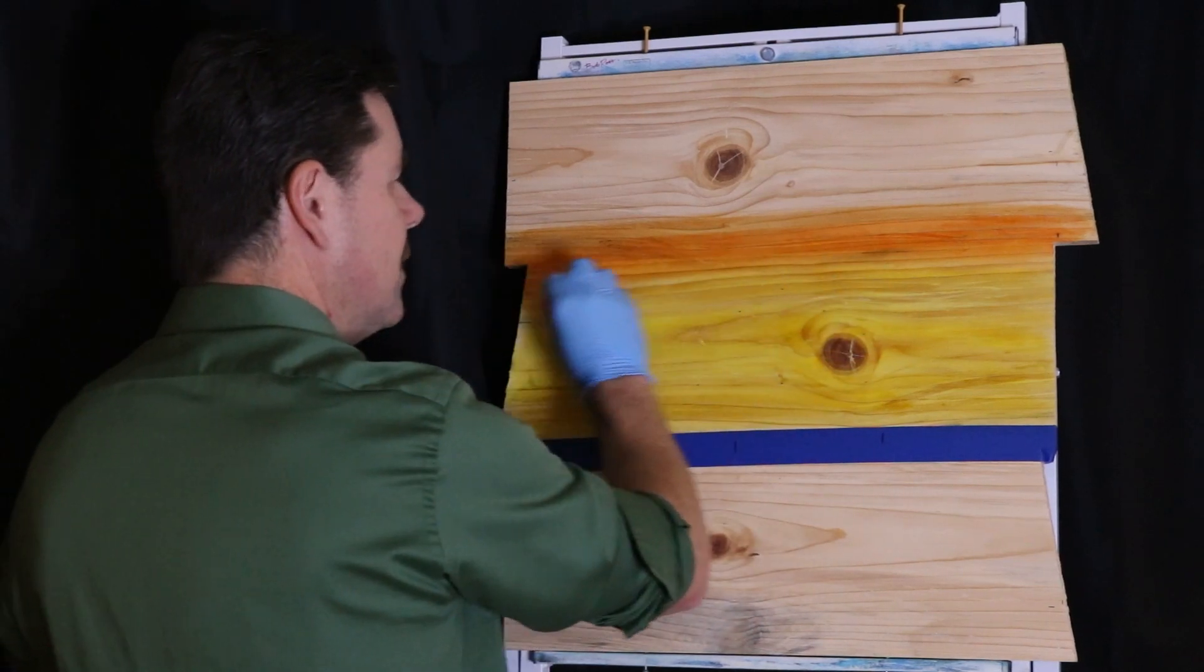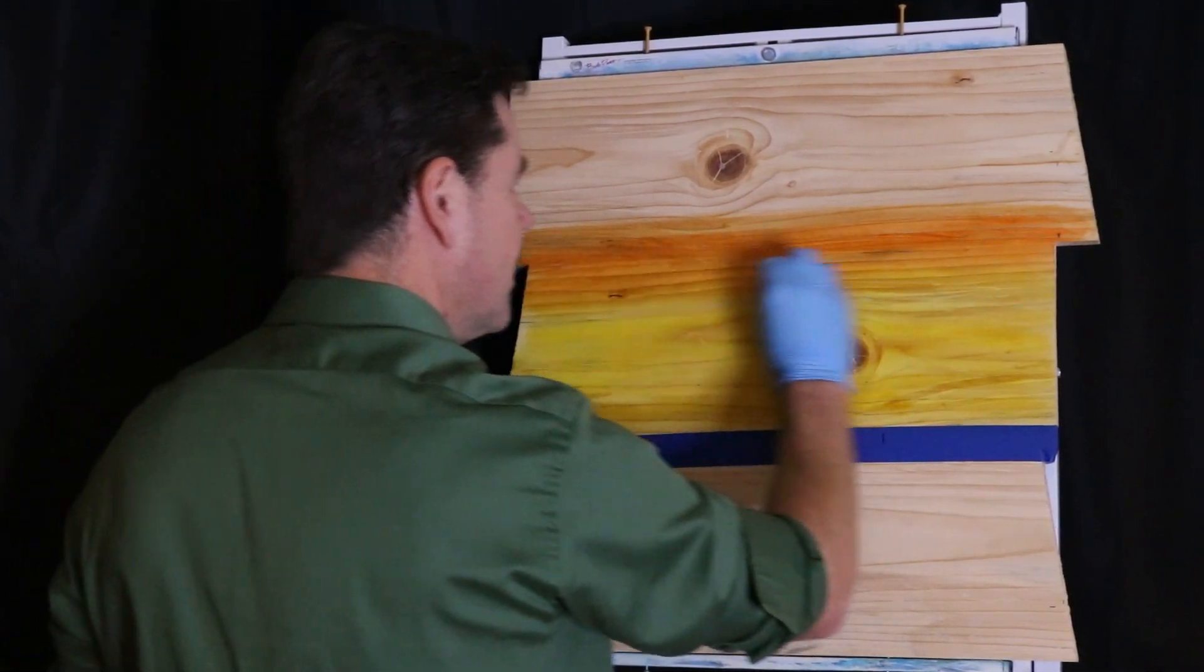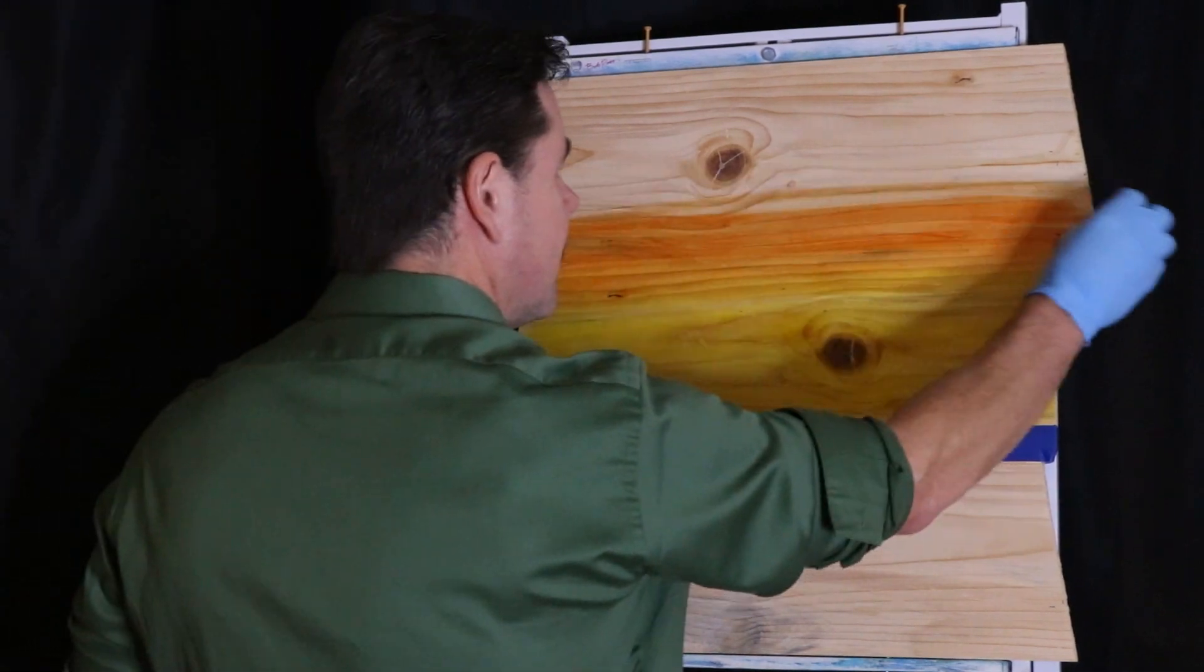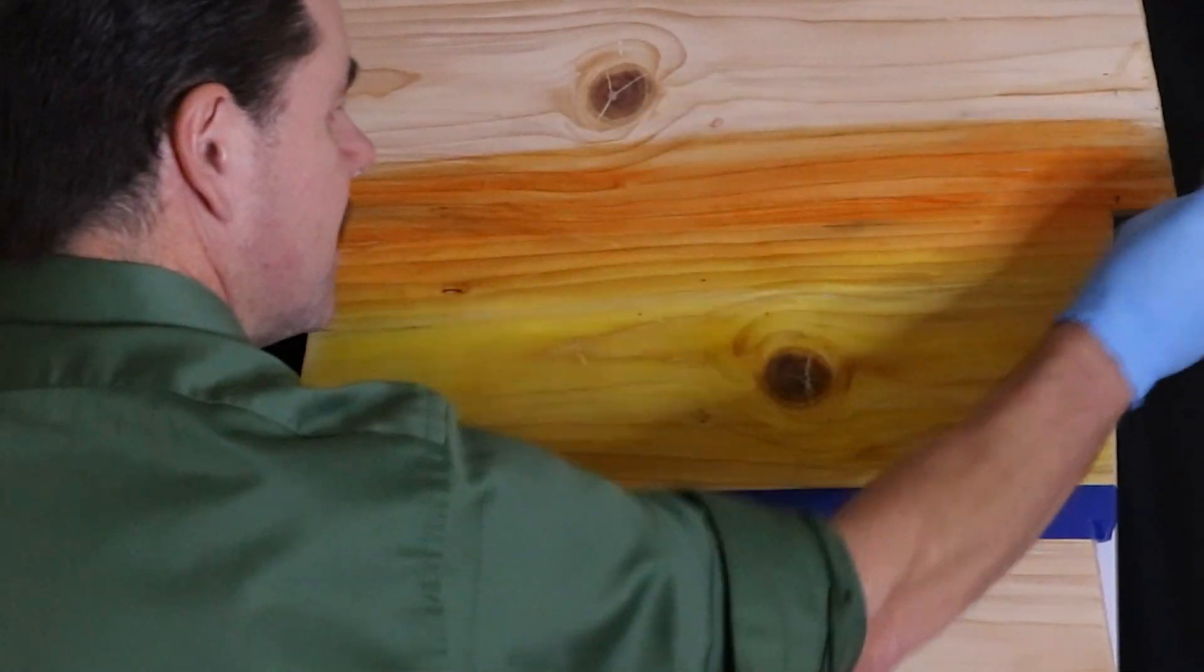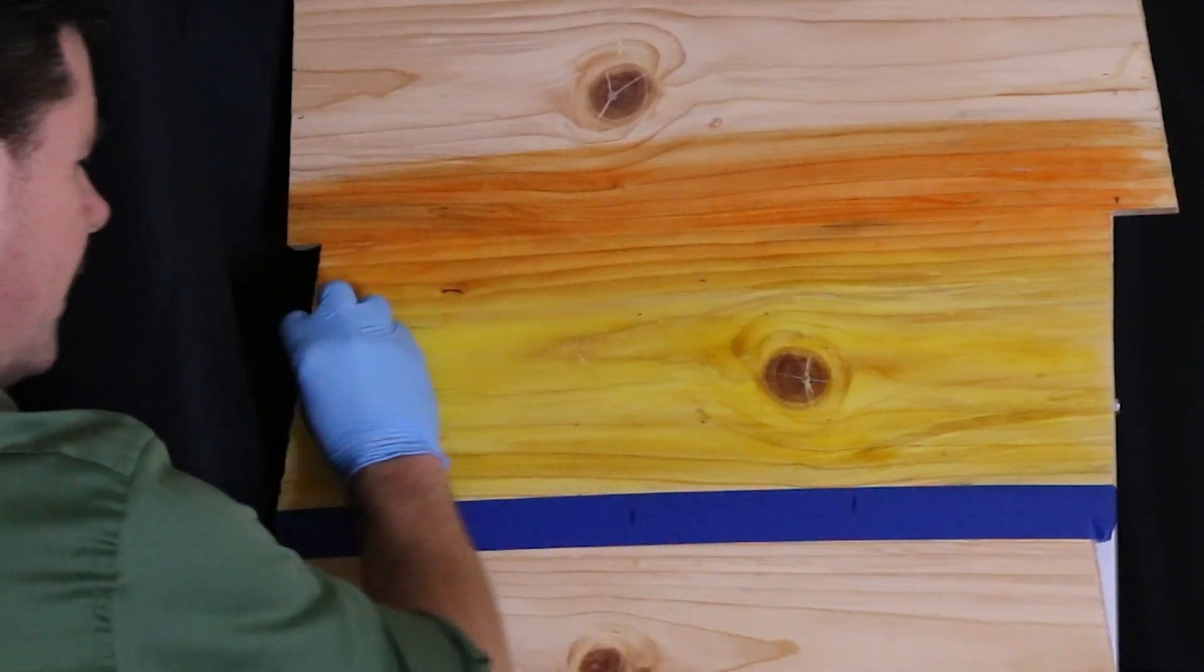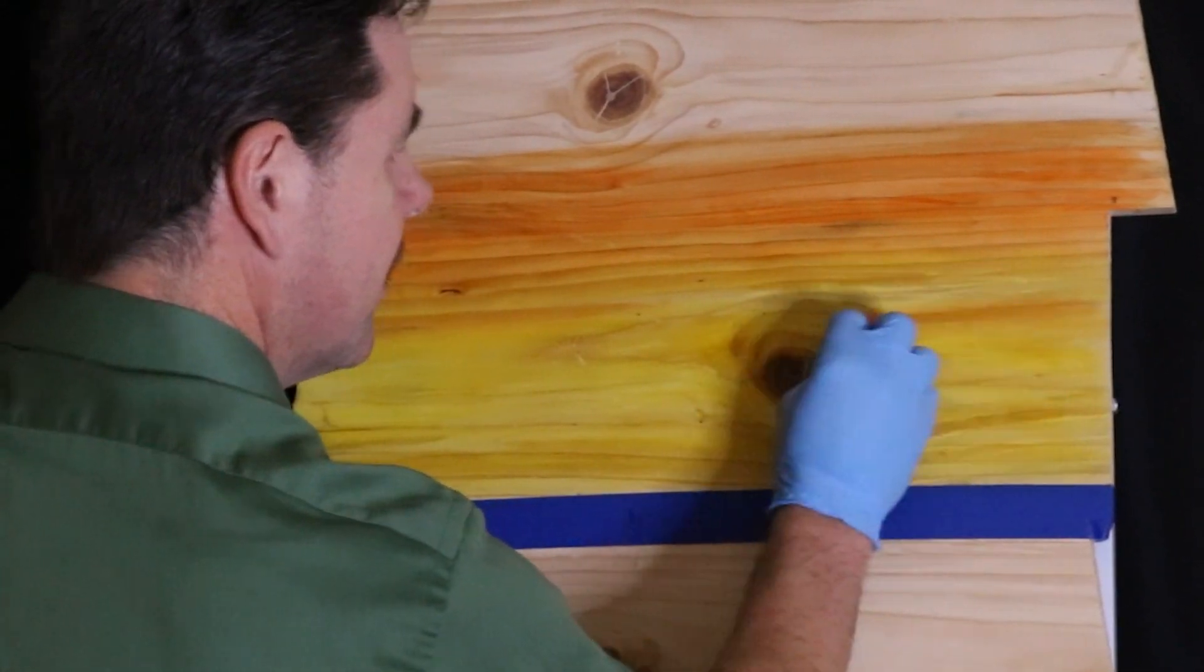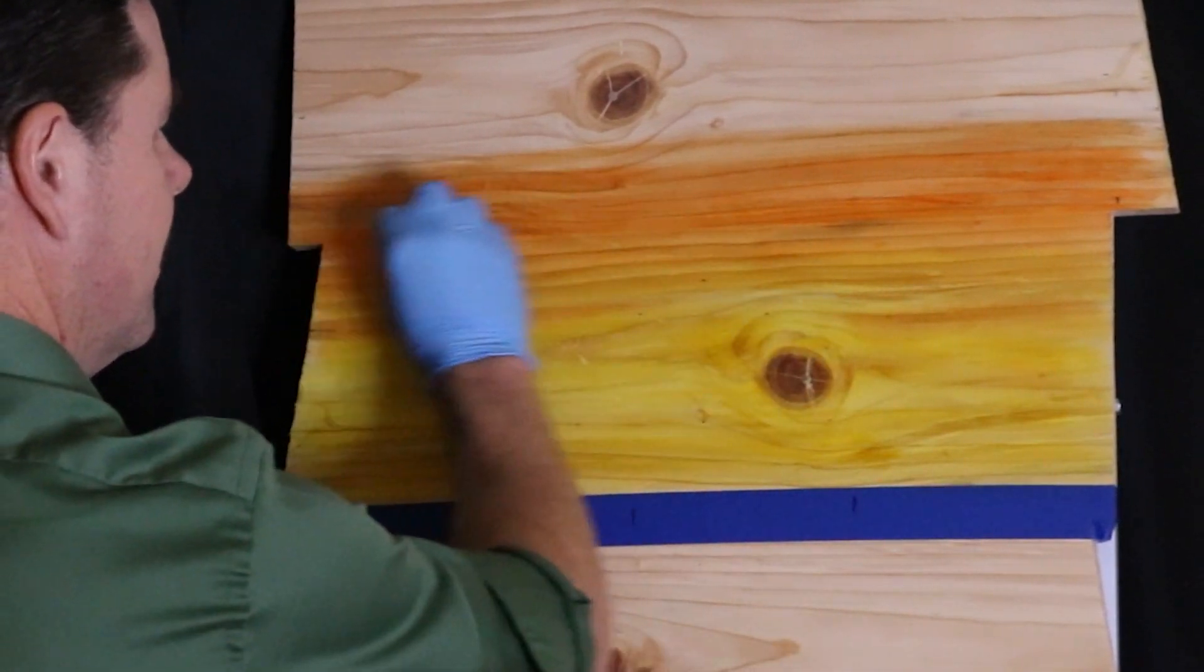I mix my dyes using isopropyl alcohol, which is nice if you can stand the odor. It works really good because it dries so fast. It's not going to soak your wood, which would lead to warping. Alright let's come in from the side and catch a little bit of color there.